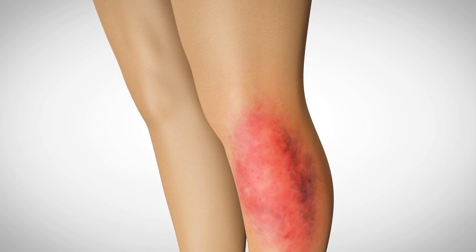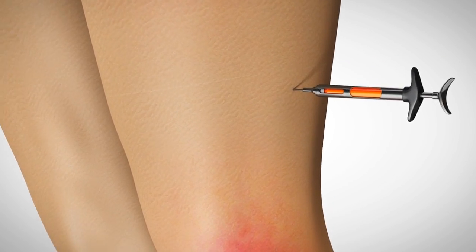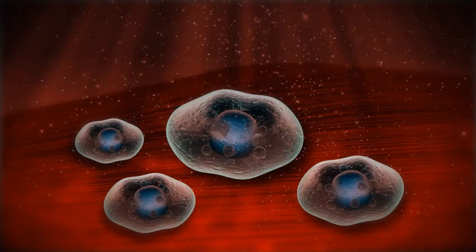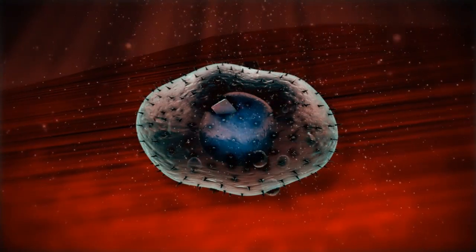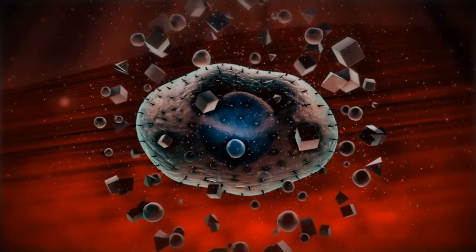PLX cells act by secreting therapeutic proteins in response to signals produced by the inflamed and ischemic area in the body. By communicating with the body, PLX cells work with nature to provide blood to the body's ischemic areas.